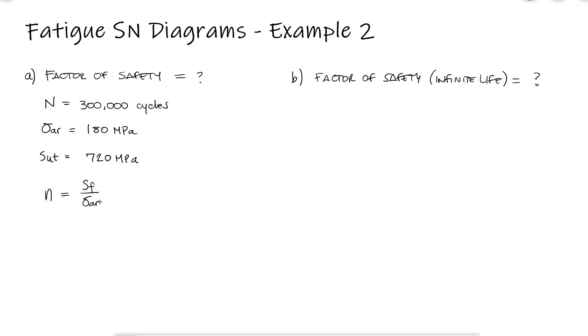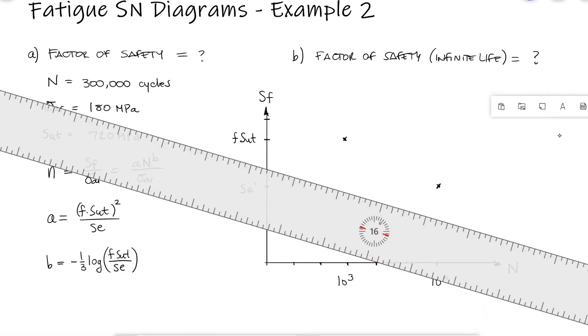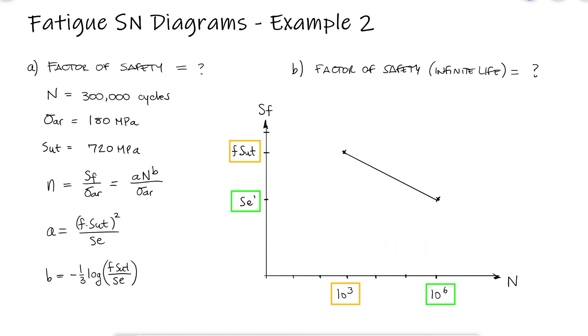The fatigue strength for 300,000 cycles, which lies between 1,000 and 1,000,000 cycles, is given by the expression a n to the b. We already know that the a coefficient and b exponent depend on the f coefficient and the endurance limit, since the fatigue strength depends on those values for 1,000 and 1,000,000 cycles respectively.